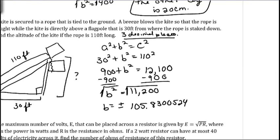And so, we want to answer this with a sentence. And so, the altitude of the kite is 105.830 feet.